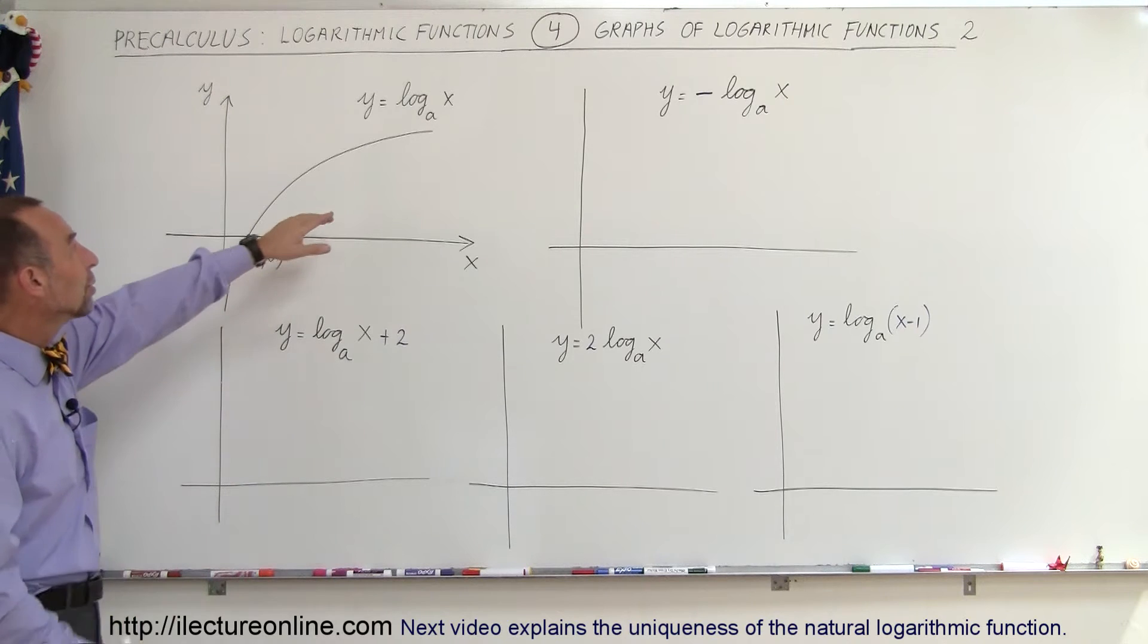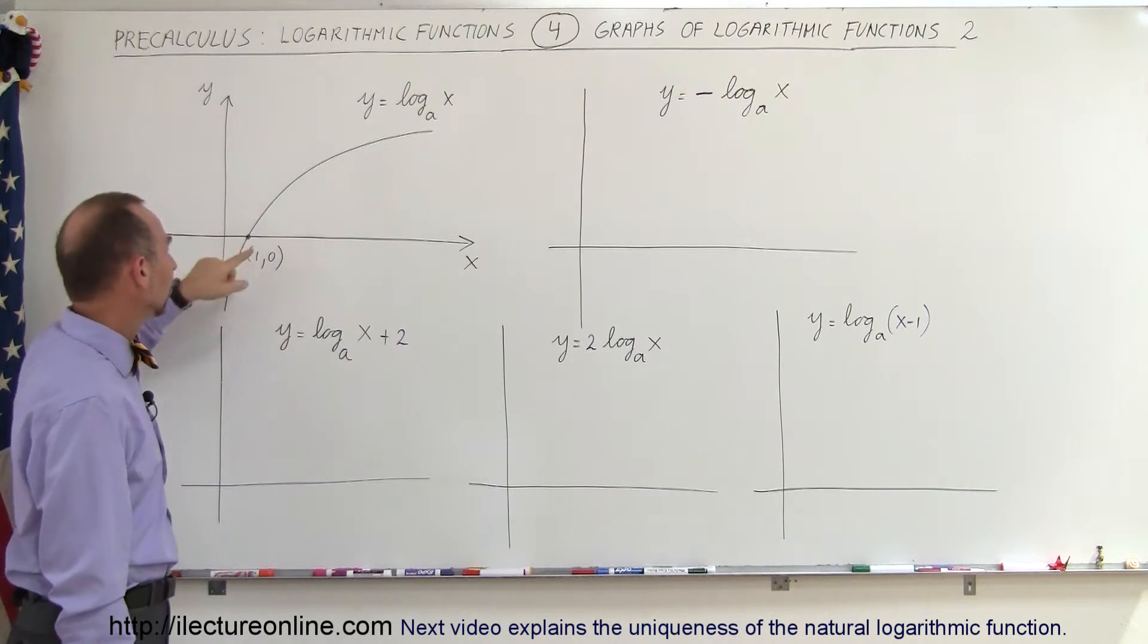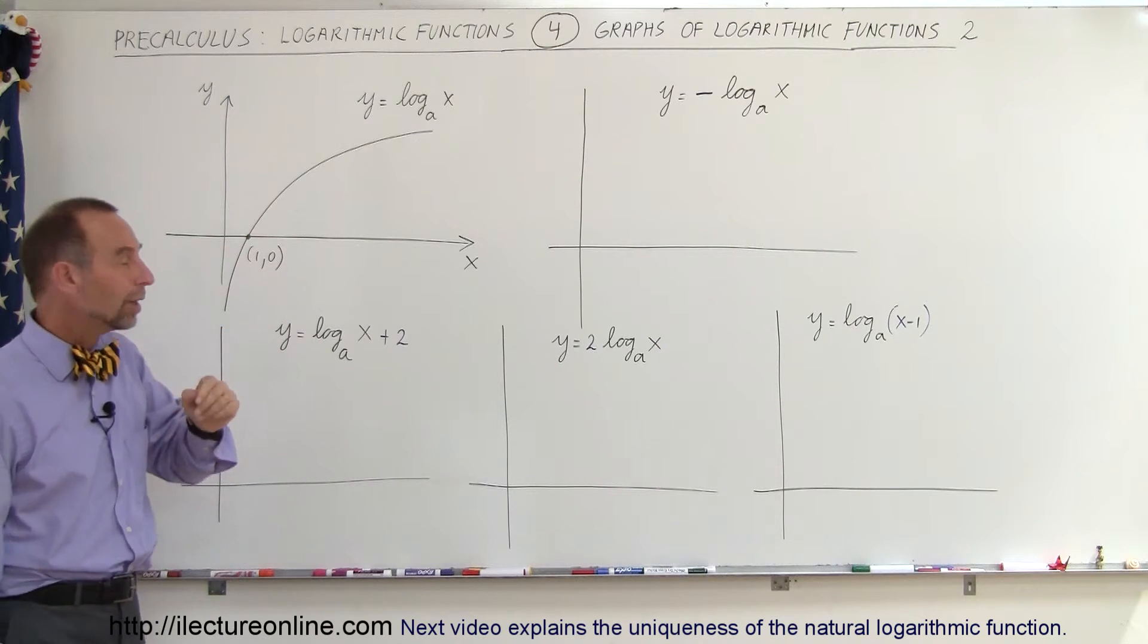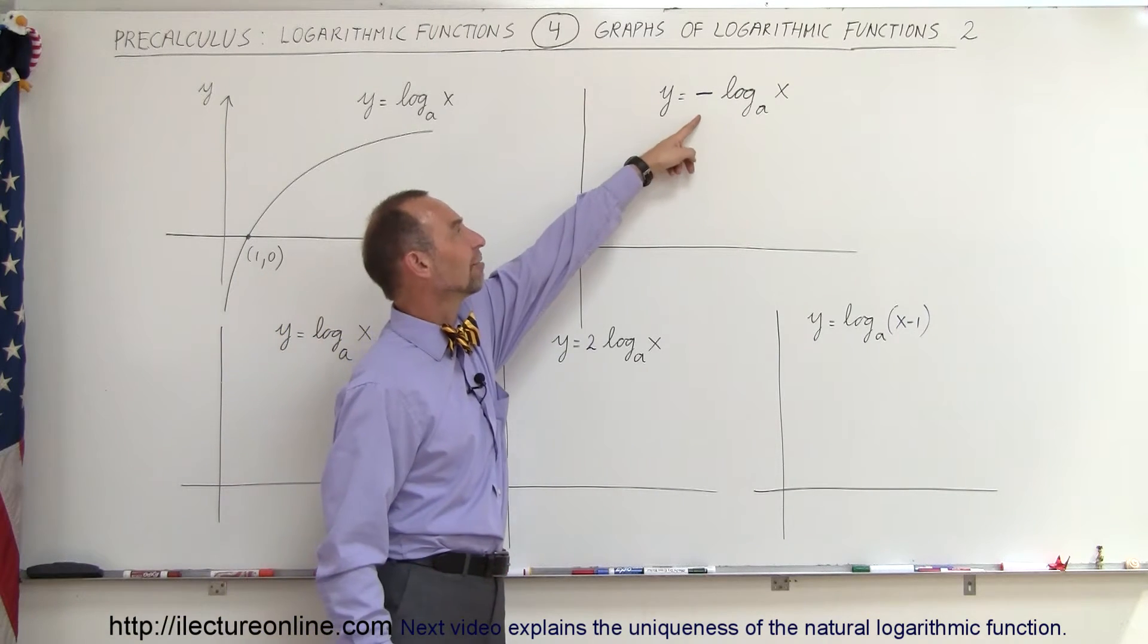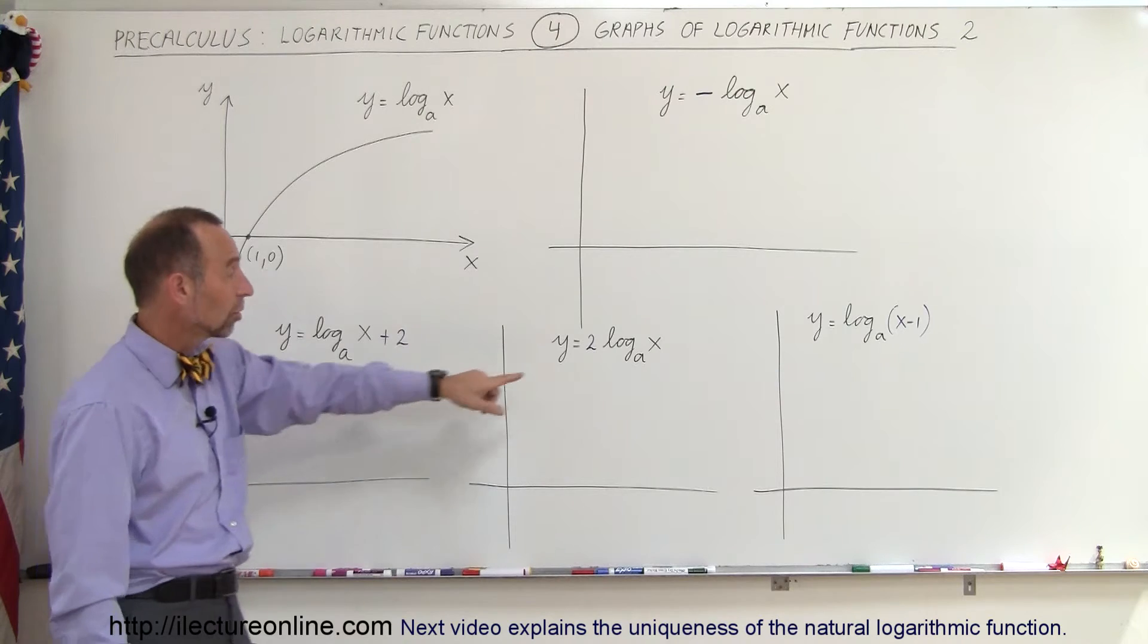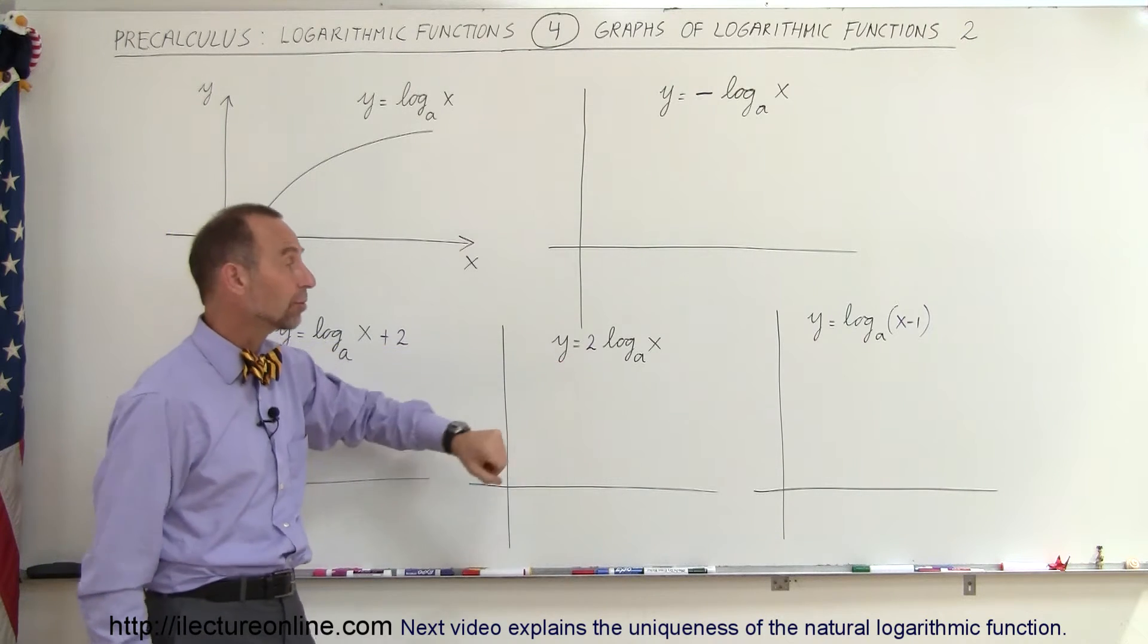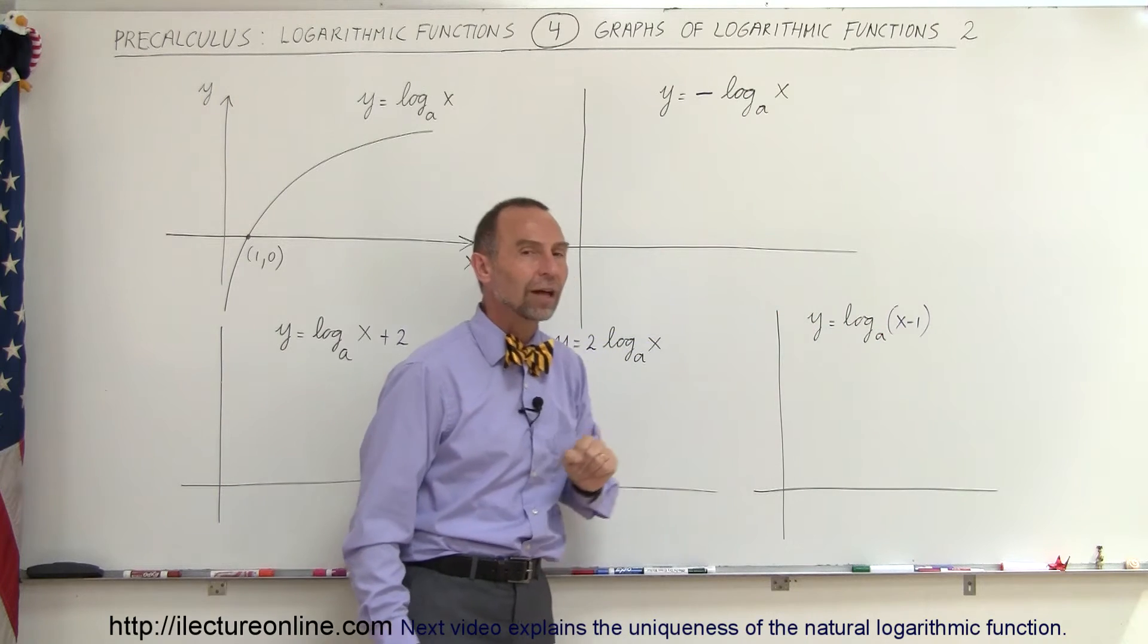For example, we already know how to graph y equals the log of base a of x. It looks like this. We know that it goes to the x-axis where x is equal to 1 when y is equal to 0. But what does it look like when we put the negative sign in front of it? What does it look like when we add another constant? What does it look like when we multiply times a factor? Or what does it look like when we subtract or add a number to the value of x?